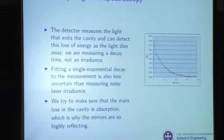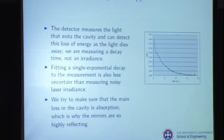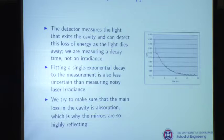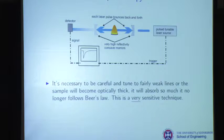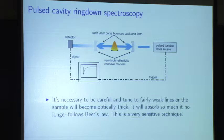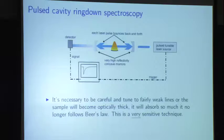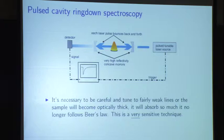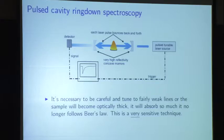The ring-down time is a time-based measurement, not an amplitude measurement — you fit a single exponential to the decay. Try to make the main cavity loss the absorption you're looking for, which is why the mirrors are so highly reflecting. However, you have to be careful: with path lengths of kilometers, you can accidentally go optically thick without realizing it. Some people have started using more transmissive optics for this reason. It's an extremely sensitive technique.